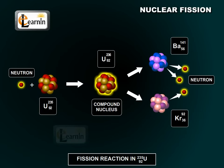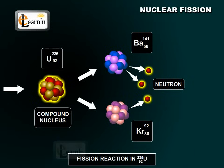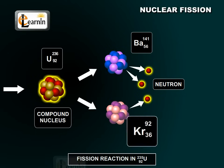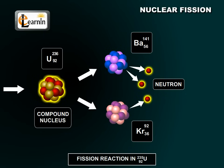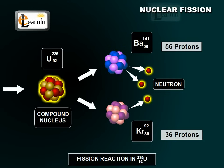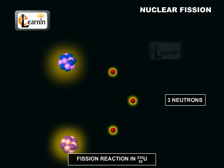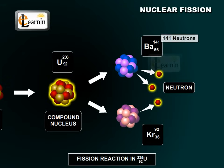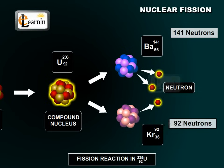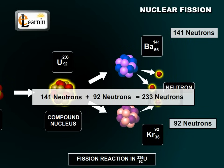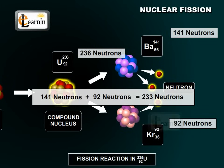During the process of fission, uranium-236 splits into two product nuclei, which are barium-141 and krypton-92. A barium atom has 56 protons and a krypton atom has 36 protons, which add up to the uranium atom's 92 protons. The unstable uranium-236 nucleus also releases three neutrons in the process, because barium-141 has 141 neutrons and krypton-92 has 92 neutrons, adding up to a total of 233 neutrons. To balance the equation, uranium-236 must emit three more neutrons.